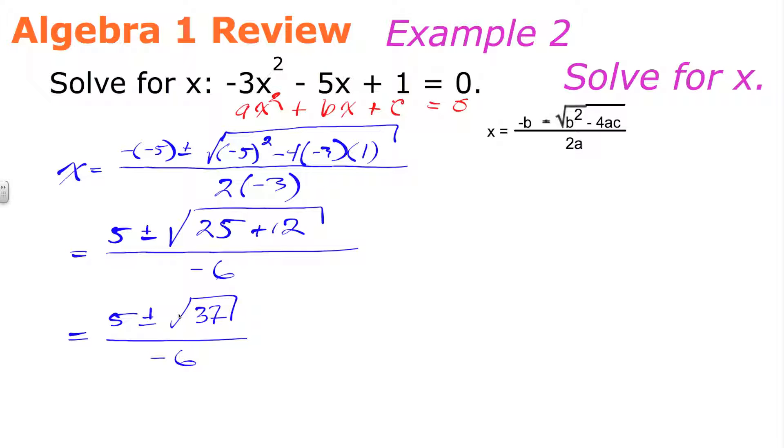Though it's harder to understand, this would be a perfectly simplified answer. Now, if you're asked to estimate, say, to the nearest hundredth place or give a decimal answer, the way you do that would be similar to what we did in the last example. We have two separate problems: (5 + √37) / -6 or (5 - √37) / -6. And when you run those into your calculator, rounding them to the nearest hundredth or two decimal places, you end up with -1.85 or positive 0.18. So, here's our two solutions.